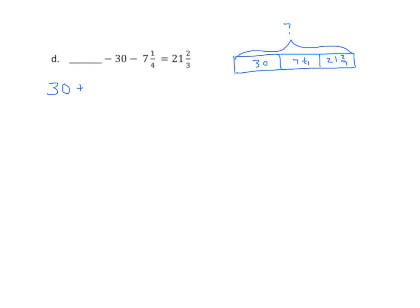30 plus 7 and 1 fourth plus 21 and 2 3rds. We can add the whole number of parts: 30 plus 21 is 51 plus 7 is 58 plus 1 fourth plus 2 3rds. We will find our common denominator, which is 12. 1 fourth is 3 12ths and 2 3rds is 8 12ths. We find the sum: we get 58 and 11 12ths. So in the blank here we could put 58 and 11 12ths. Moving along.